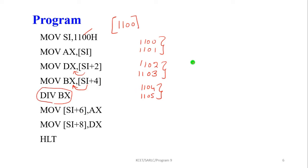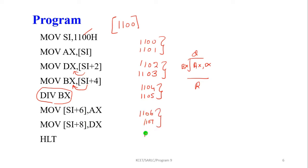We perform the division of AX and DX by the BX register. The quotient value is stored at memory locations 1106 and 1107, and the remainder at 1108 and 1109. After division, the quotient is in AX and the remainder is in DX. The AX value is moved to the quotient memory location and the DX value is moved to the remainder memory location.